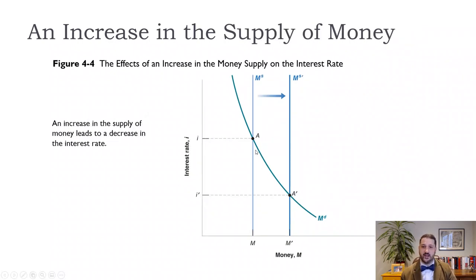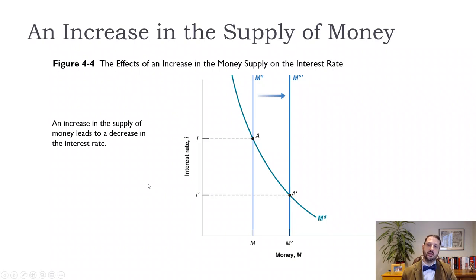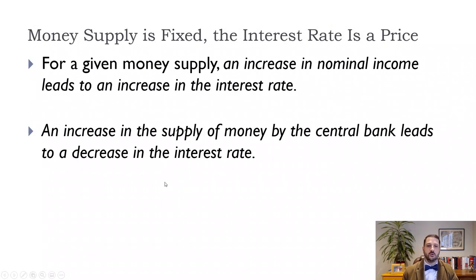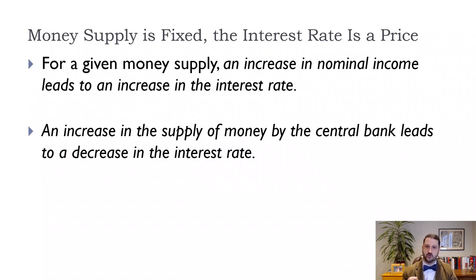To lower the interest rate, the Federal Reserve increases the money supply by buying Treasury bills and Treasury bonds from banks and giving them money — technically reserves — in exchange. Finally, it's important to remember that the interest rate is a price: it's what brings money demand and money supply into equilibrium given a central-bank-fixed money supply. If the interest rate gets stuck at zero, monetary policy can become ineffective, which is a key limitation we'll revisit.